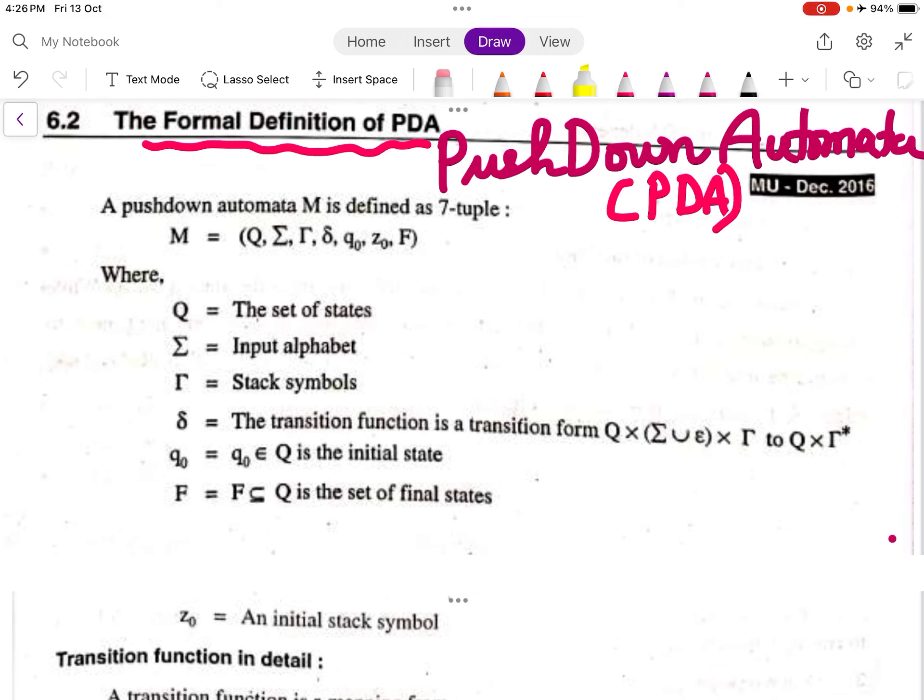A Pushdown Automata M is defined as a 7-tuple. The 7-tuples are M equals (Q, Σ, Γ, δ, q0, Z0, F), where Q0 is the initial state, Z0 is the initial stack symbol, and F is the final state.